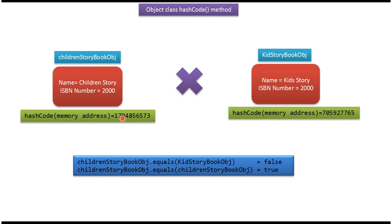The memory address of the Children's Story Book object is different from the memory address of the Kids Story Book object. So if you try to do equals of Children's Story Book object with Kids Story Book object, we will get false. If you try to do equals of Children's Story Book object with itself, we will get true, because we are comparing the same object.